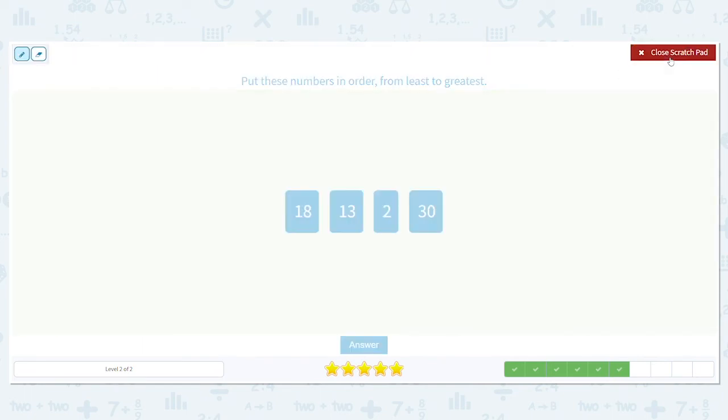This time we have 18, 13, 2, and 30. And we're still going from least to greatest. Which one will go first? Which is our least? Again, think of age if it helps you. Two is the lowest. And look, 30 is already over here. That's the highest. I know 30 is higher than 13. And I know 30 is higher than 18.